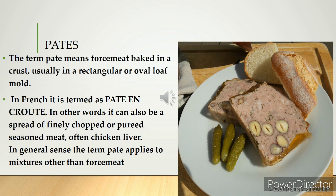Pâté means paste, and the term refers to force meat baked in a crust, usually in a rectangular mold — something like a loaf tin. To make pâté, generally goose liver, duck liver, or chicken liver can be used, along with other ingredients like truffles, lean meat, and seasoning.